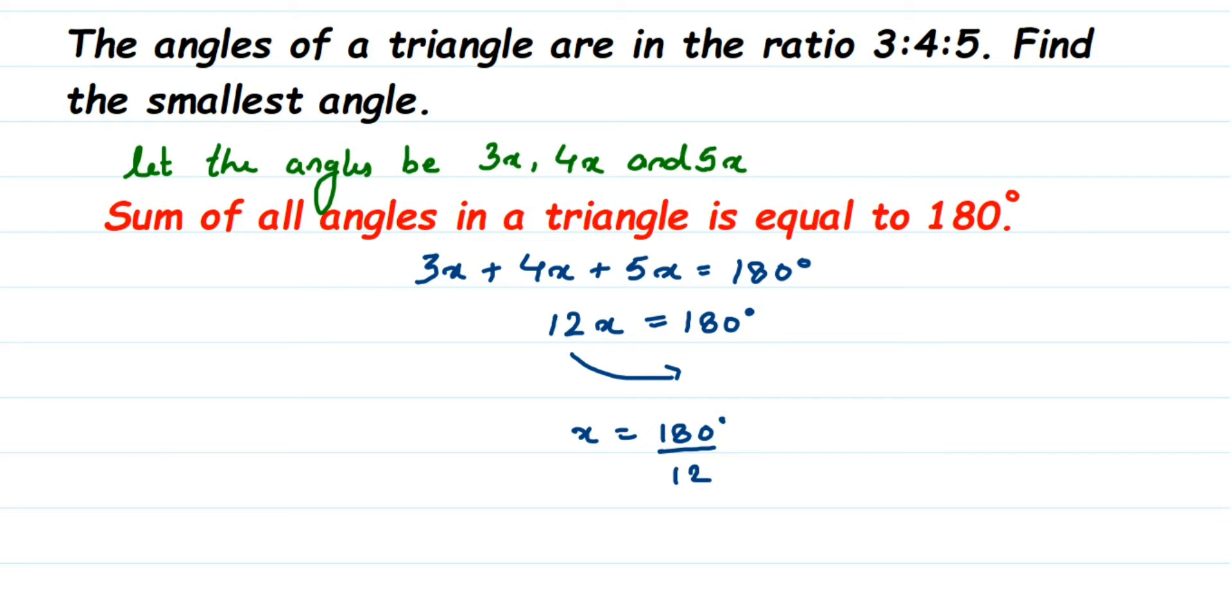Now, we're going to cancel this. We're going to cancel this in the 2 table. 2 times 6 is 12 and 2 times 90, because 2 times 9 is 18 and this is 0, it will become 90.